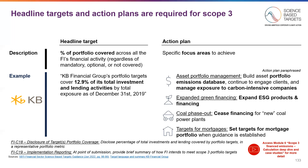Additionally, on the right, we have some examples of an action plan. We've provided a summarized version of some of the steps that KB is taking to lower their Scope 3 emissions, including engaging clients on this topic, expanding their green financing, phasing out coal, and setting targets for mortgages once guided to be established.